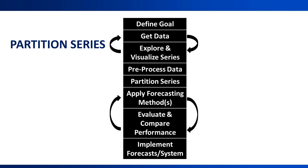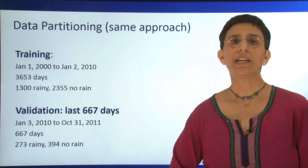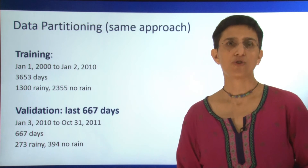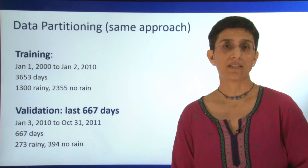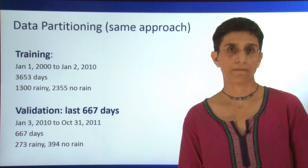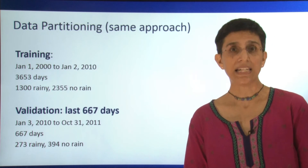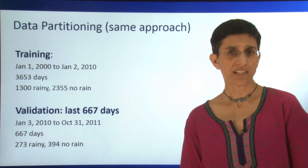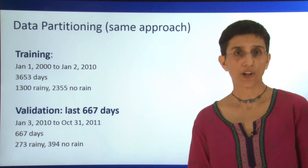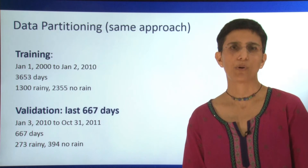Defining the goal is different, the data might be different, and we're exploring and visualizing the series in a different way. However, for the step of data partitioning — where we partition our data into training and validation periods — nothing really changes and we use the same approach. For example, we take the rain data and split it into two periods. The training period starts from the beginning of 2000 and ends on January 2nd, 2010, with 3,653 days, of which 1,300 were rainy. The validation period is 667 days long, from January 3rd, 2010 to October 31st, 2011, with 273 rainy days.